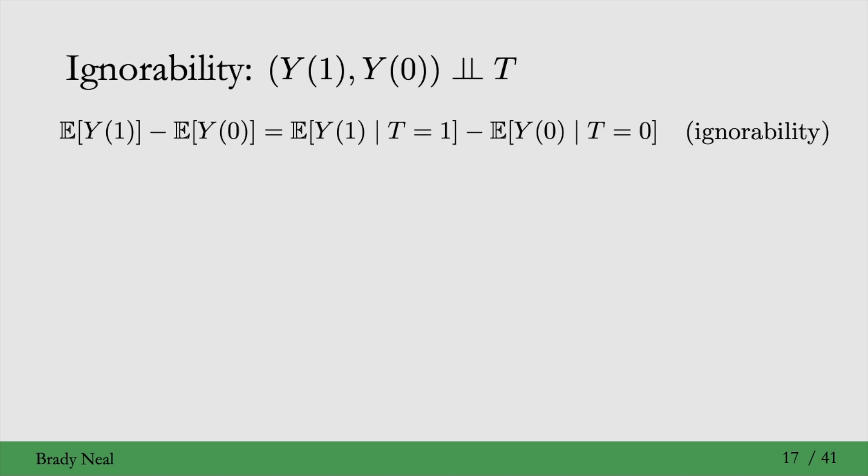So, if we look at the ATE here on the left-hand side, if we assume ignorability, then we can condition on treatment, because both potential outcomes are independent of treatment, so we have this equality. Then we just have that this turns into the associational difference. So, the potential outcome y1, given that my treatment was 1, is the same as the outcome, given that my treatment was 1. Similarly, potential outcome y0, given treatment equals 0, is the same as my outcome, given that treatment equals 0.